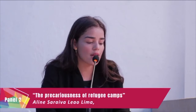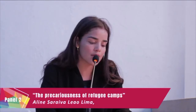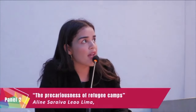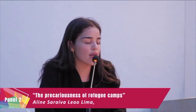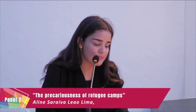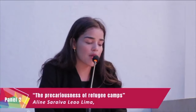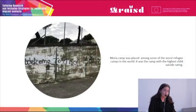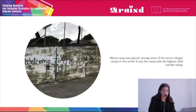Moria Camp was located on the third largest island of Greece, Lesbos. Here we can see the localization of the camp on the island. Moria Camp was a place among some of the worst refugee camps in the world, and it was the camp with the highest child suicide rating. Because of that, I chose this camp.